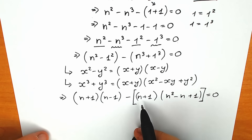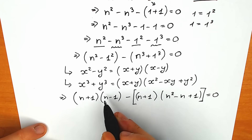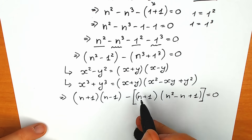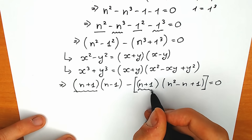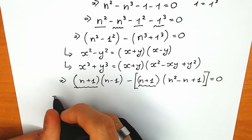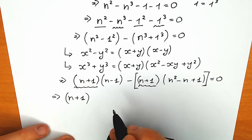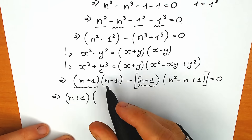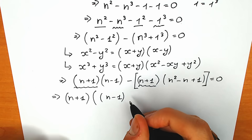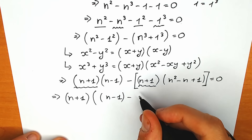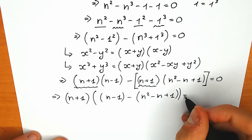When I factor it, without any problems, we can get n plus 1 here and n plus 1 here. So we can easily factor out n plus 1 as a common term. So we have n plus 1, and in the other parenthesis: n minus 1, minus the expression n-squared minus n plus 1 — changing all signs to the opposite — giving minus n-squared plus n minus 1, equal to 0.